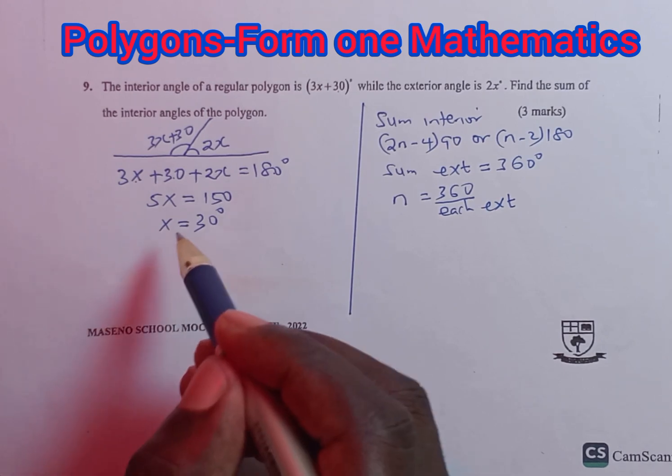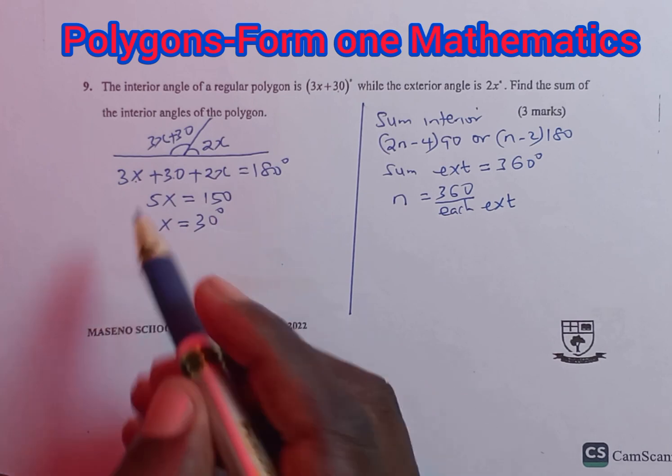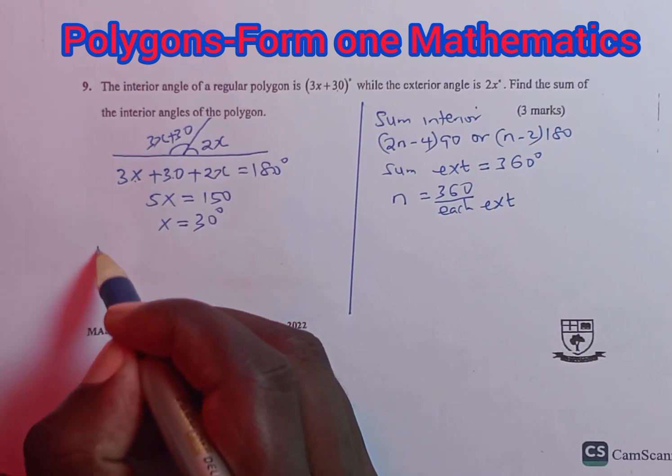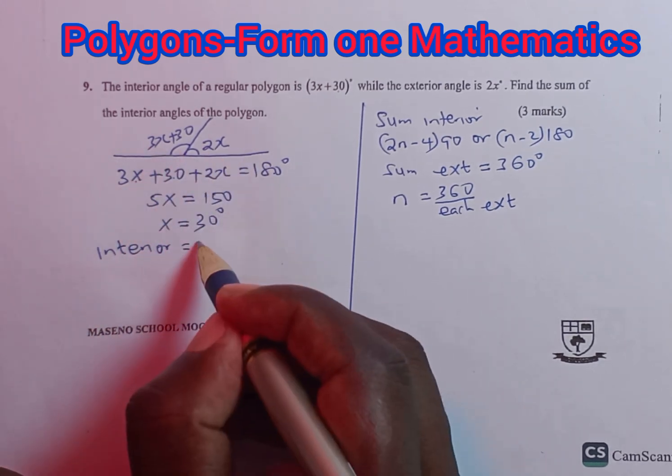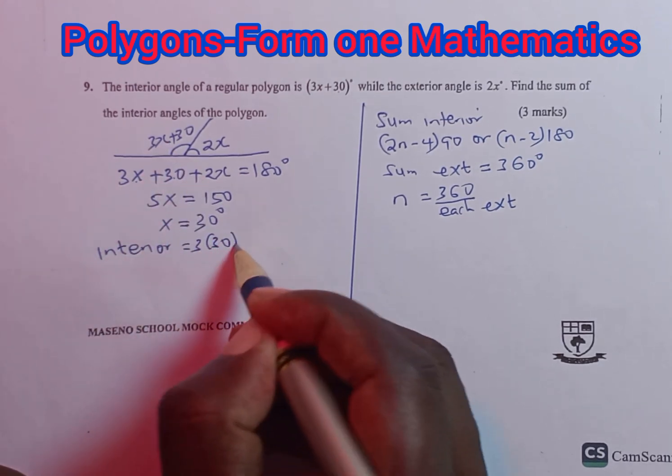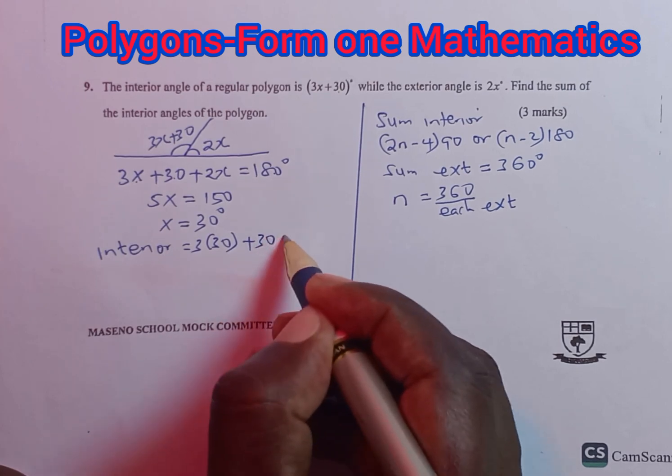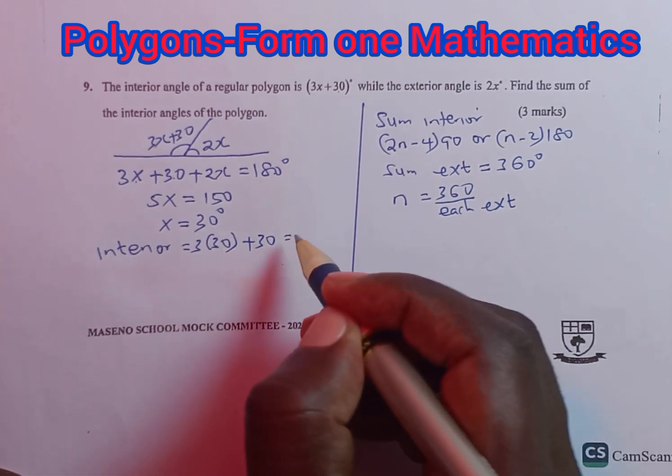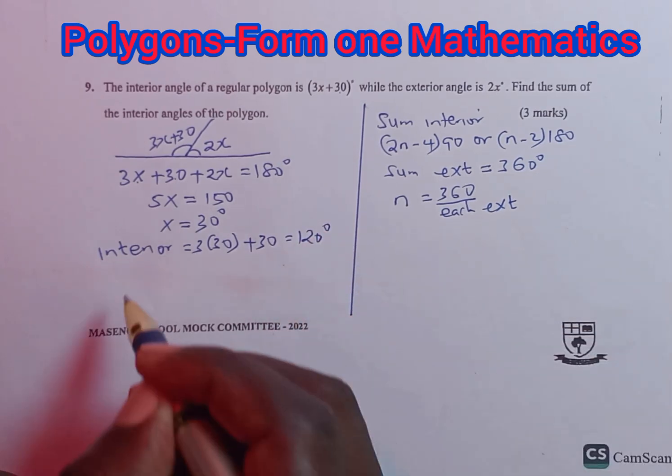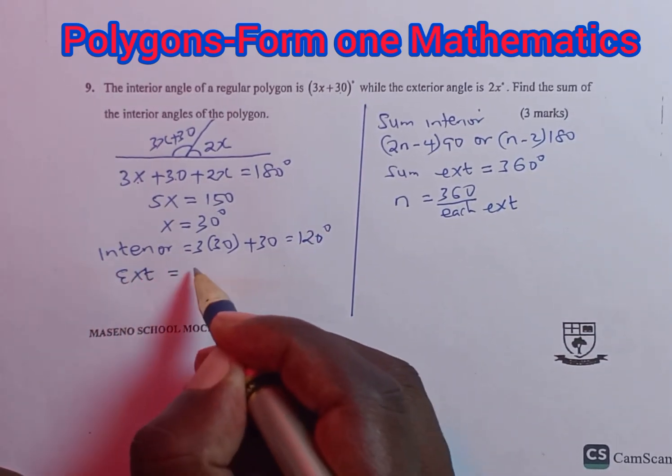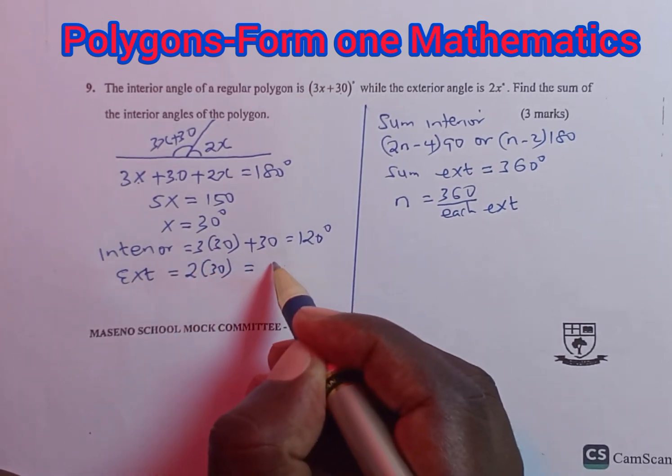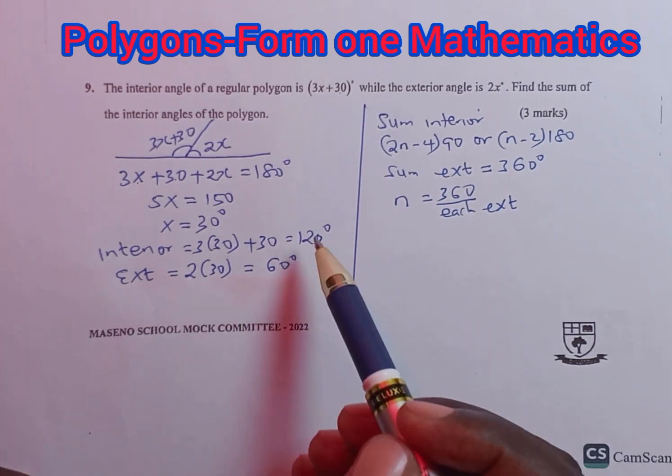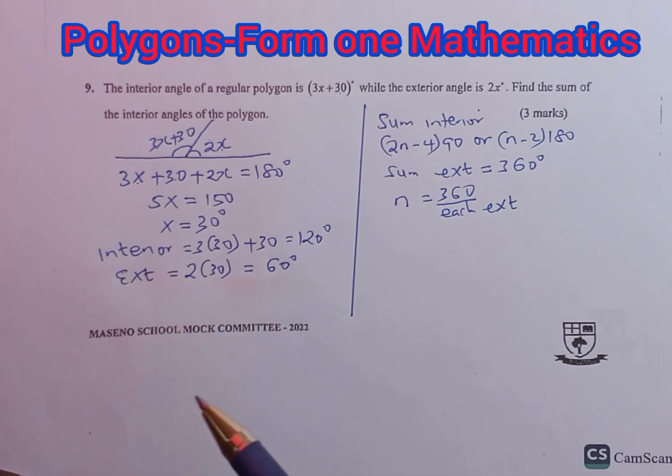Once we have the size of x, we can go back and get the interior angle. The interior angle is 3 times x, which is 30, plus 30. 3 times 30 is 90, plus 30 gives us 120 degrees. The exterior angle is 60 degrees. You realize interior and exterior give you an angle equivalent to 180 degrees.